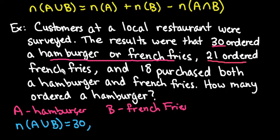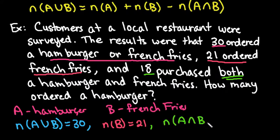It tells us that 21 ordered just french fries. Okay, so remember that we're going to use B to represent our french fries. So we can say that the number in B is 21. So if we continue reading, it says that 18 purchased both a hamburger and french fries. So that tells us that we have in A and B is equal to 18.